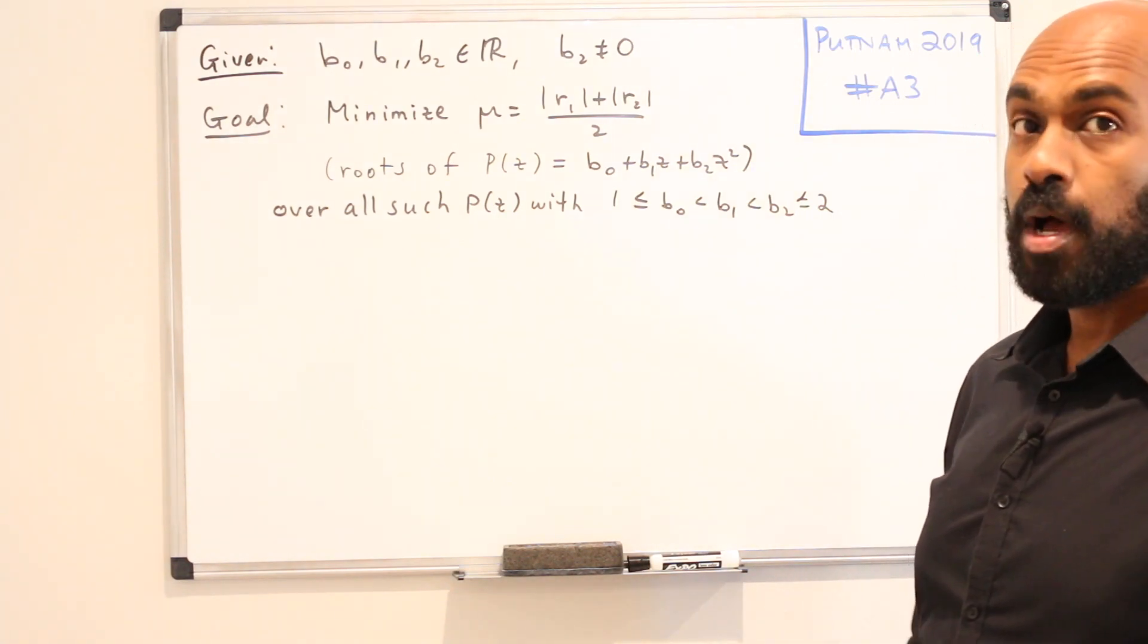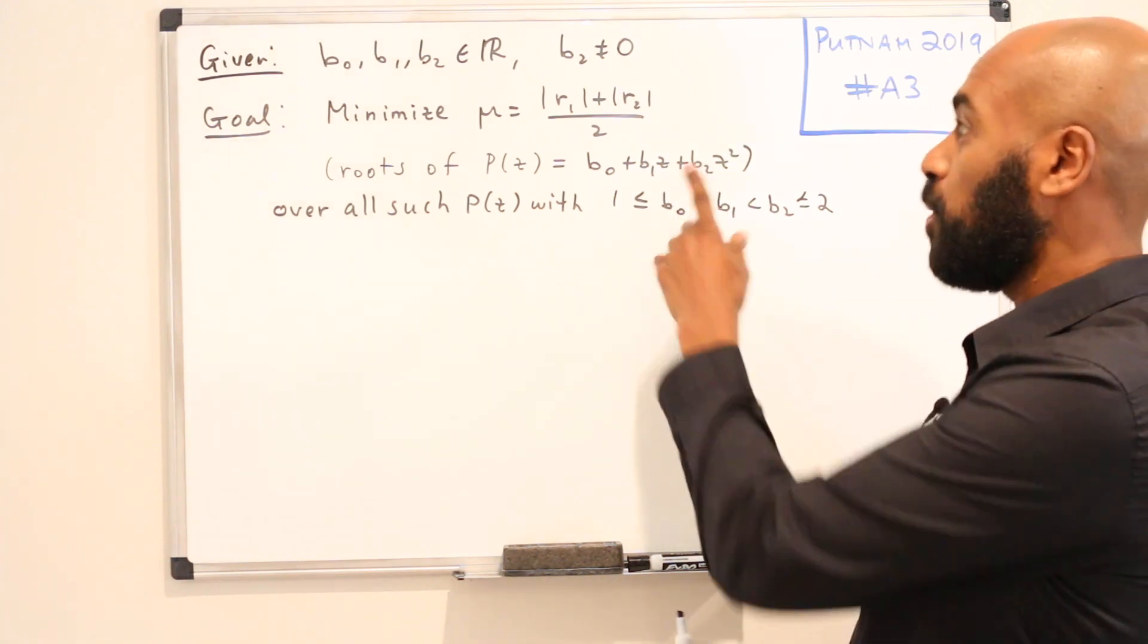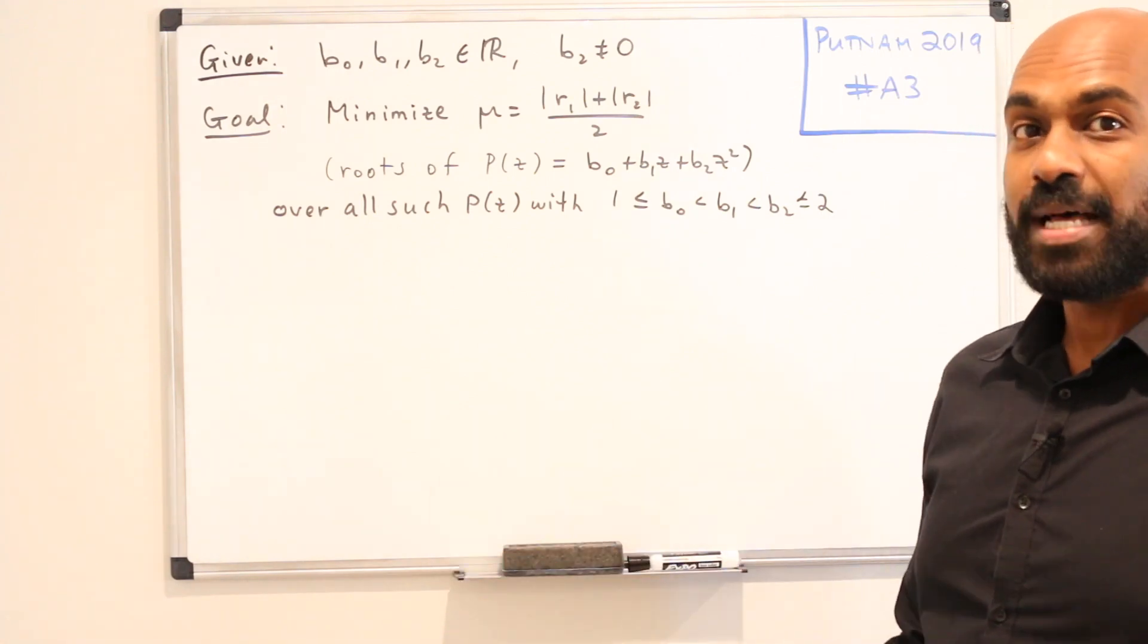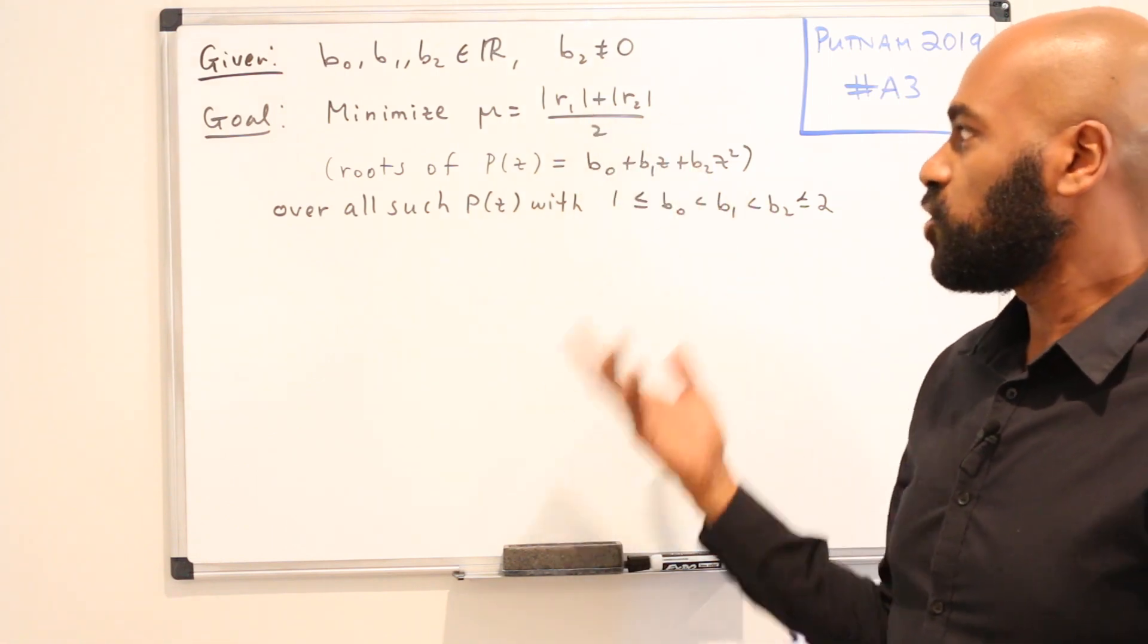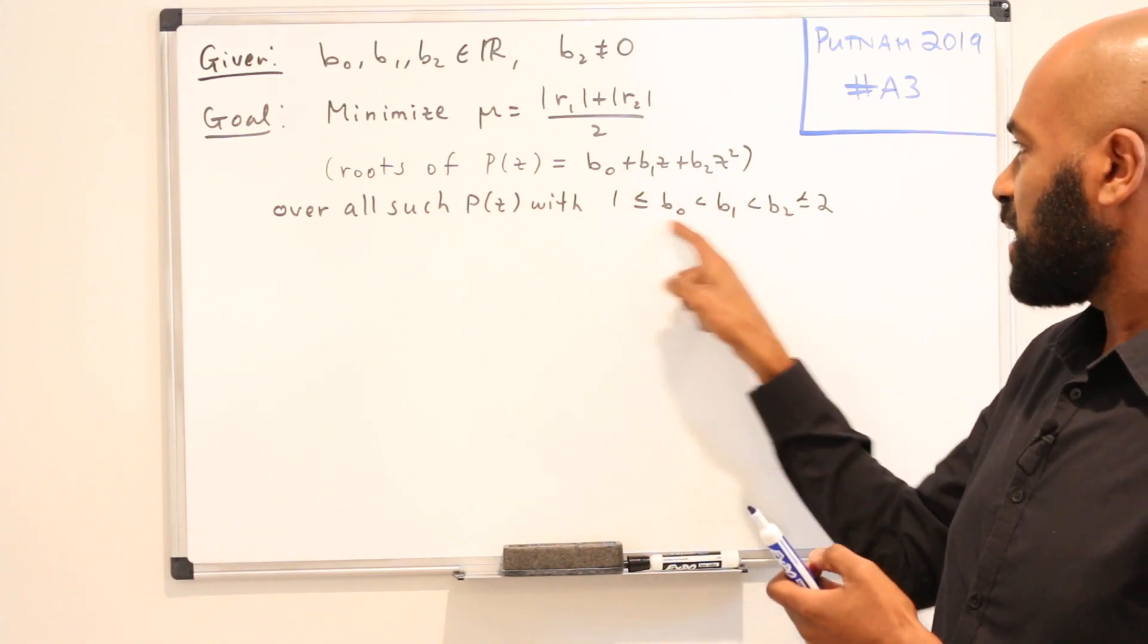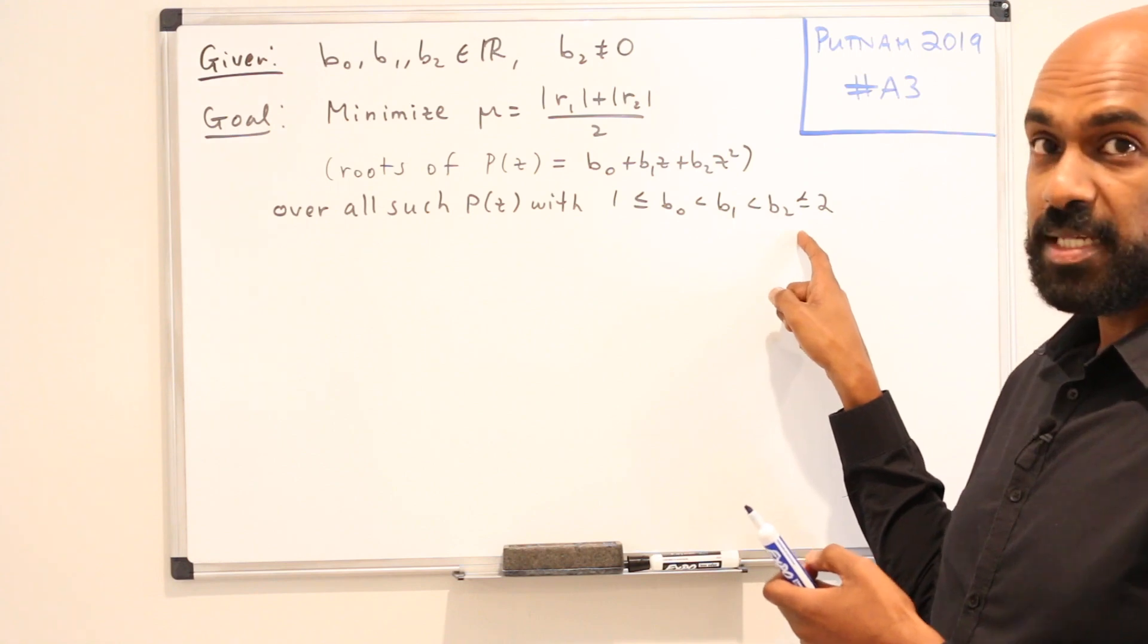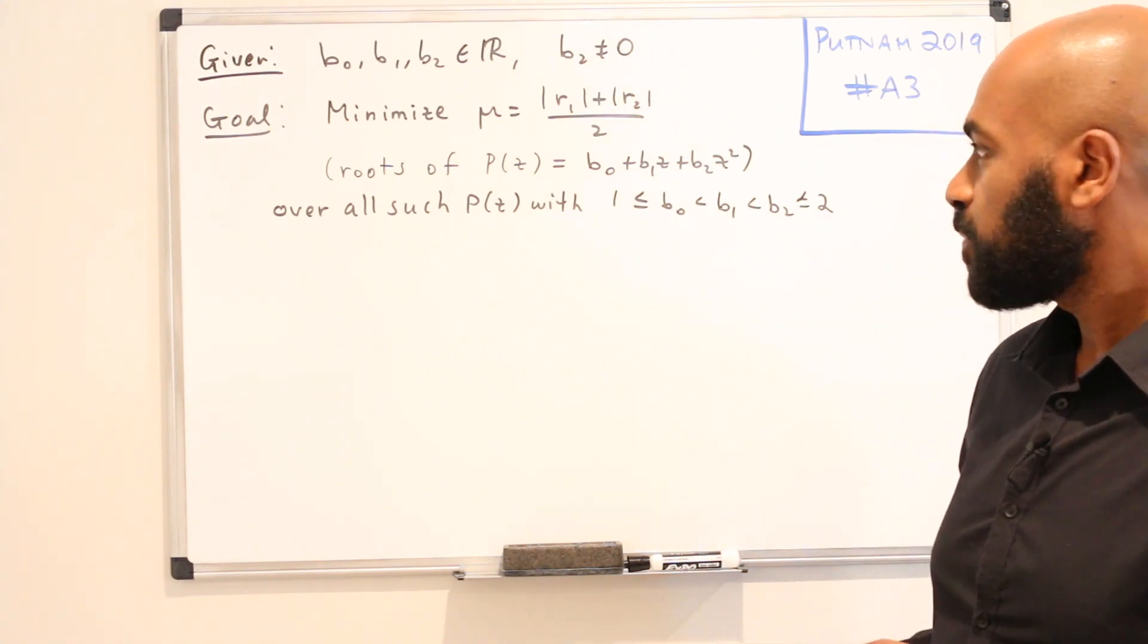We looked at this candidly and changed it from a problem involving the 2019-degree polynomial to a quadratic polynomial, and see what we can do here to gain insight of what to do in the 2019 case. We're going to minimize the average of the moduli of the roots over all polynomials that look like this where the coefficients satisfy this condition. We notice that they're increasing like they were in the 2019 case, but I've replaced the 2019 upper bound by 2.